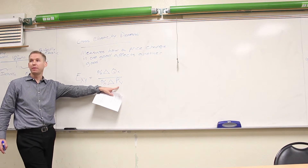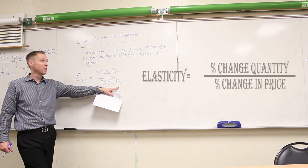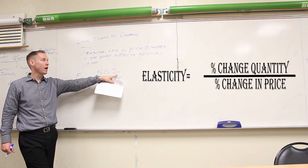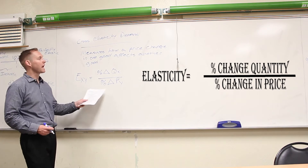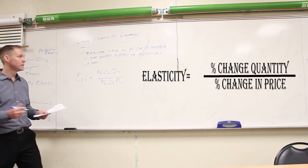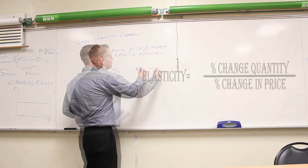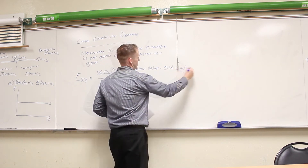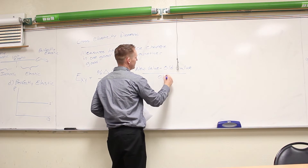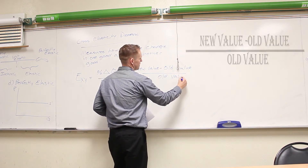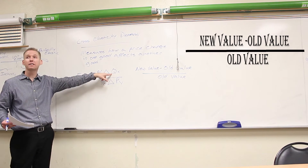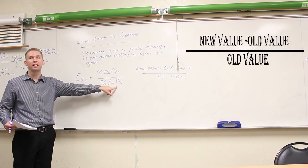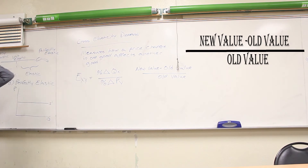So PY would be the price of another good and quantity X would be the quantity of the good in the market that we're looking at. This is calculated the same way — we take the new value minus the old value divided by the old value, for both the percentage change in the quantity of good X and for the percentage change in the price of good Y.